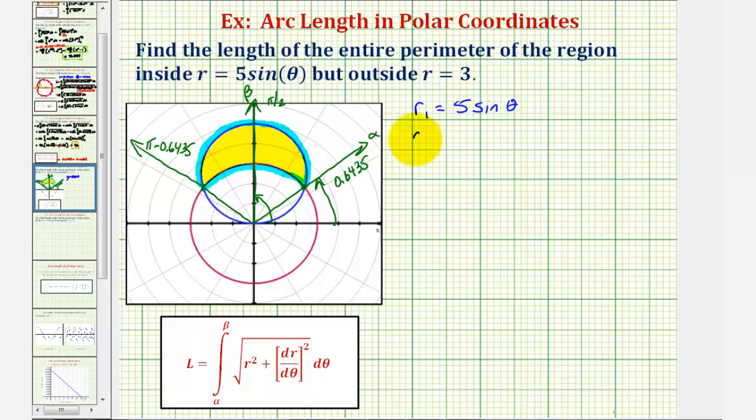And if we let r sub two be equal to three, notice that dr sub two d theta would be equal to zero.